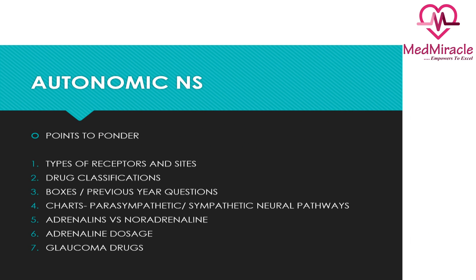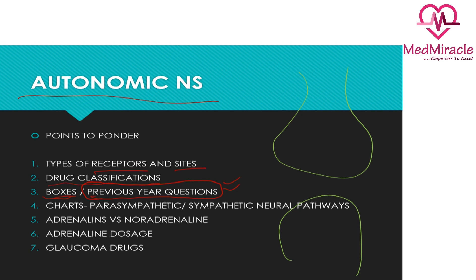Now coming to the autonomic nervous system, you mainly have to know the receptors and types: alpha-1, alpha-2, beta-1, beta-2, their locations, and drug classifications. Lots of tables are there — be thorough with them. Go through previous papers to understand what questions come in this section. There are charts on the parasympathetic and sympathetic nervous system, including the neuromuscular junction — how acetylcholine is synthesized, excreted, and metabolized — and the various inhibitors involved at various steps.